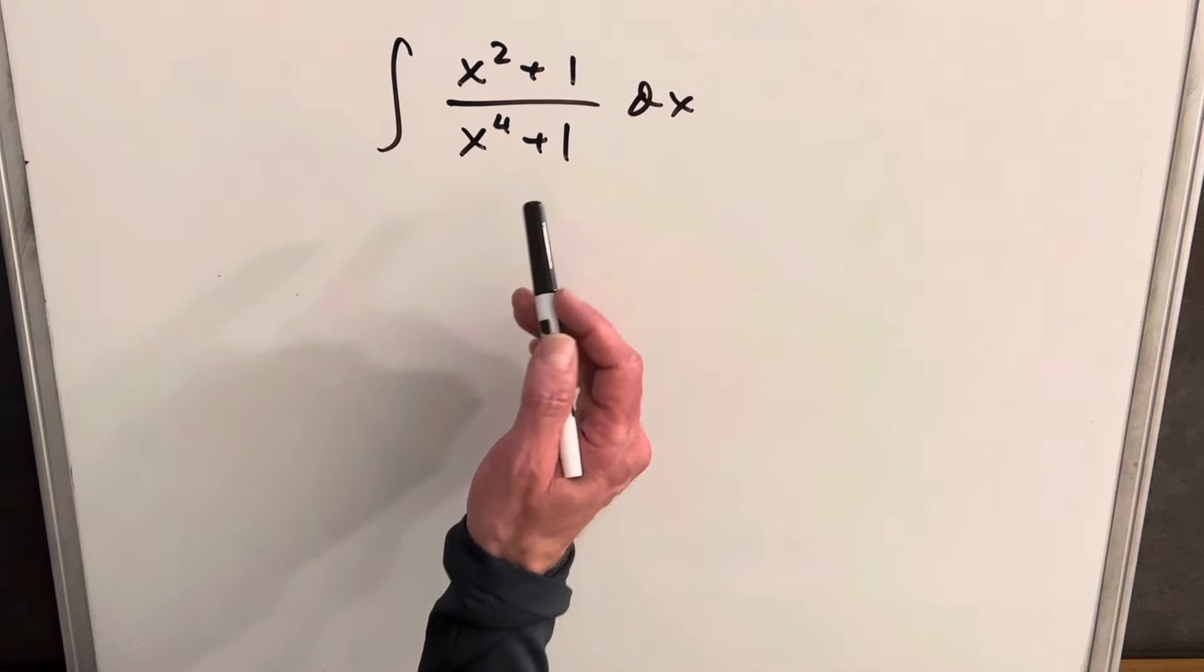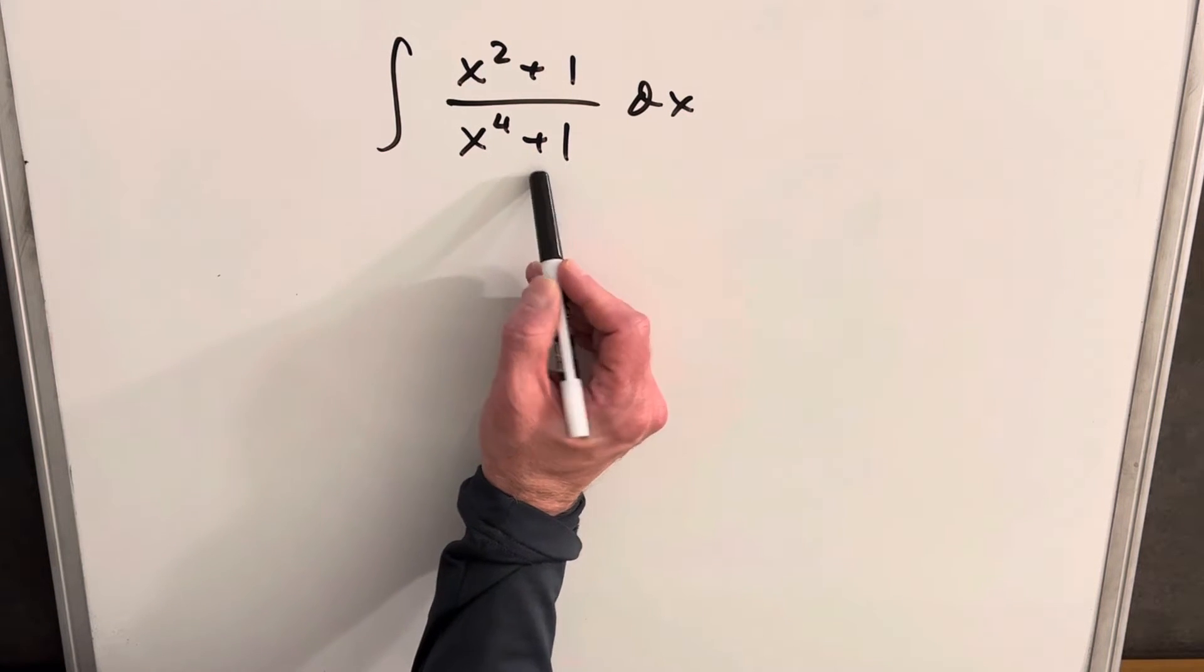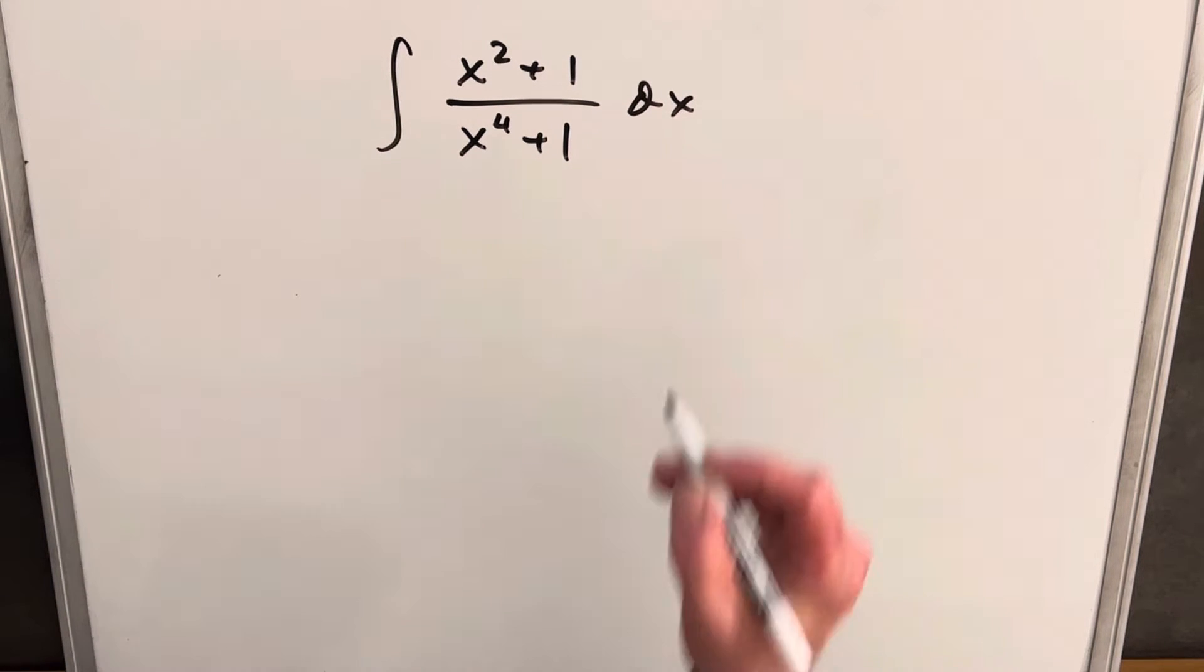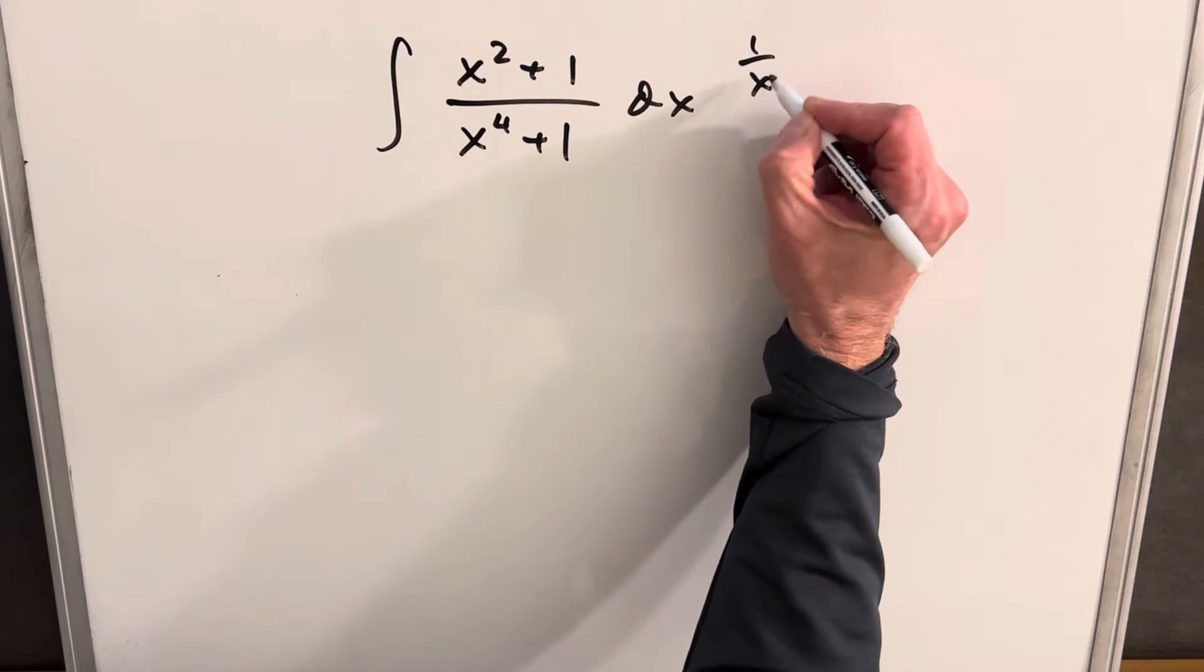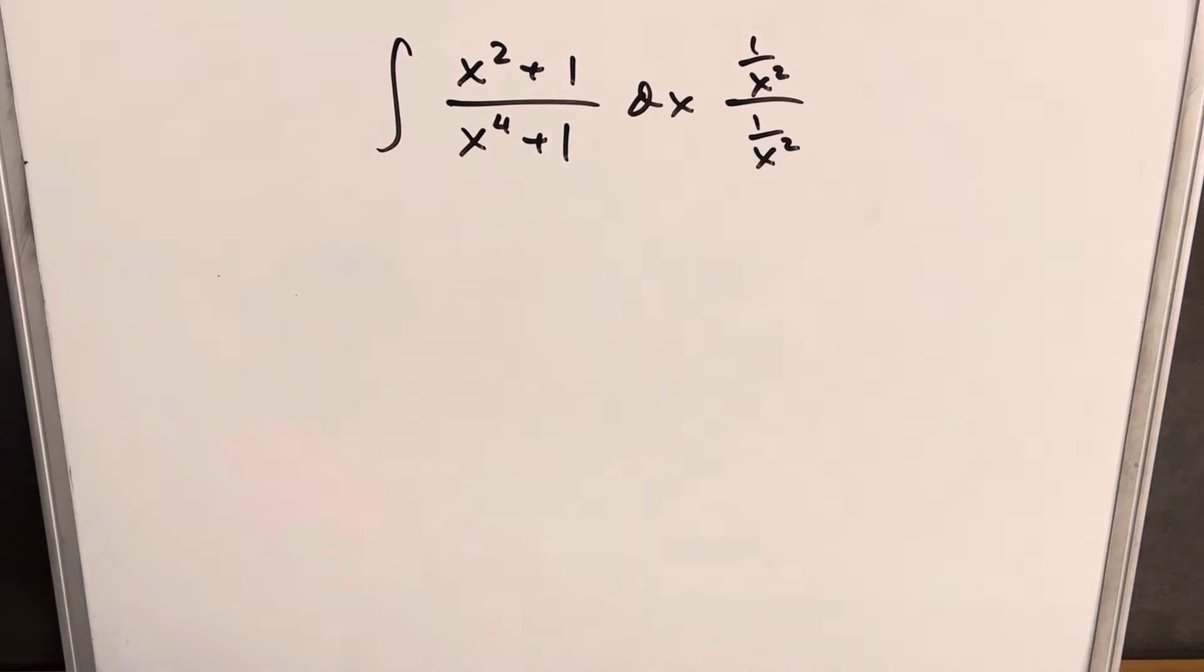The thing we notice in the denominator - if that was a minus sign, this would be great because we'd have a difference of squares, but this is not readily factorable. We could complete the square and go down the road of partial fractions, but I'd like to avoid that. I think our best bet here is going to be a trick I've used in a few other videos where we multiply the top and bottom by 1 over x squared and see what happens.